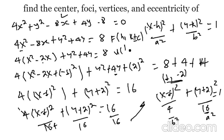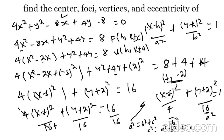For the vertex: H is constant, K value changes by plus or minus a. The standard formula gives c squared equals a squared minus b squared. So c squared equals 16 minus 4 equals 12. Therefore c equals radical 12.